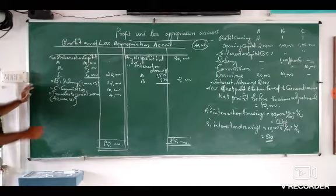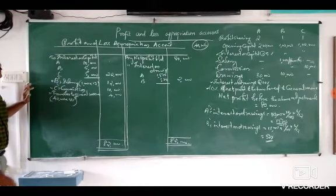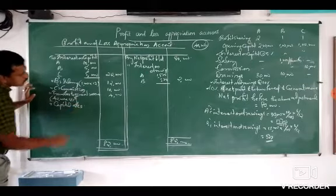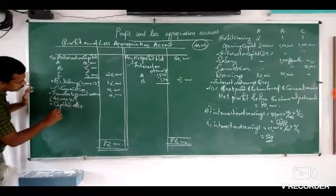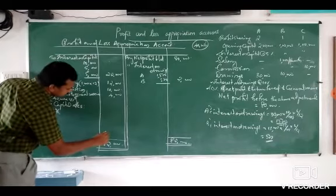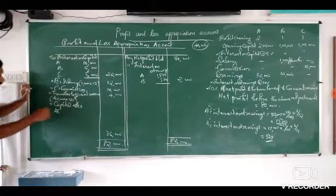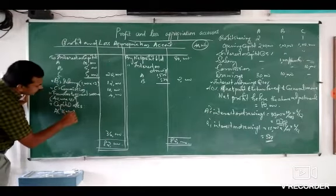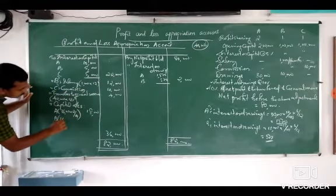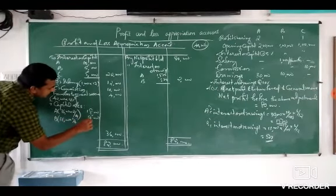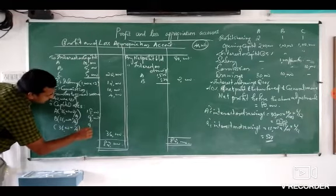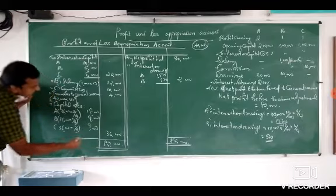Now we have to share the profits. Profits are to be shared in the ratio 2:1:1, and this profit will be credited to their capital accounts. Out of 40,000, 4,000 is deducted, so remaining is 36,000. So for A: 36,000 into 2/4 equals 18,000. For B: 36,000 into 1/4 equals 9,000. And for C: also 9,000. So the total is 36,000.